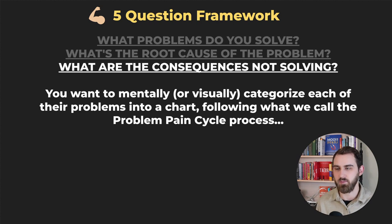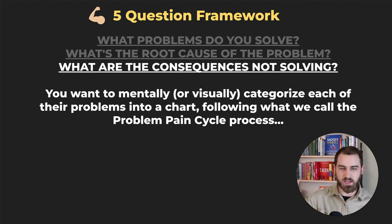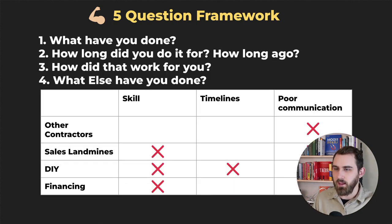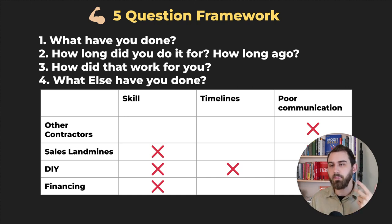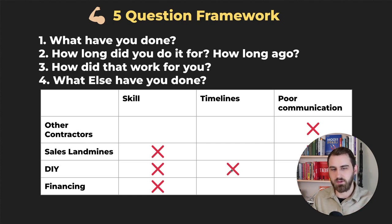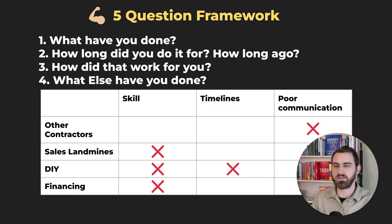Fourth question: what are the consequences of not solving the problem? Mentally categorize each problem into a pain and problem cycle. I like to have a notepad or iPad and write down their pains during the call so when I present, I can say: 'So you've tried this in the past, this is what you're trying to do, and here's roughly what that could look like.' Think about: what have they tried, for how long, how did it work, and what else have they done? Maybe they tried other agencies with poor communication, or tried doing it themselves without the skill or timeline.